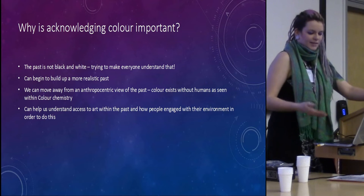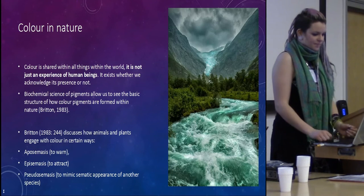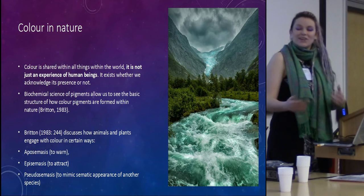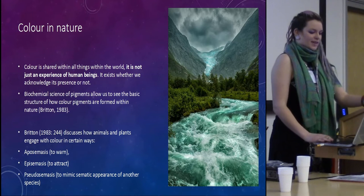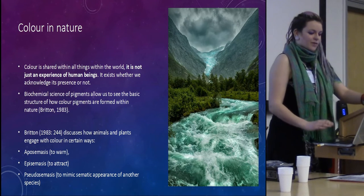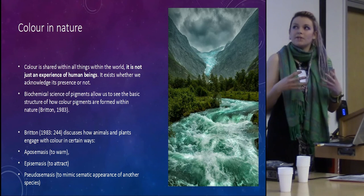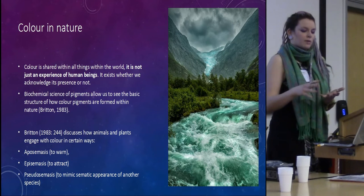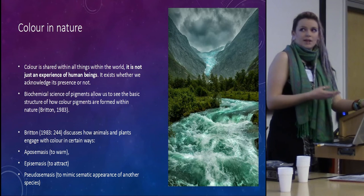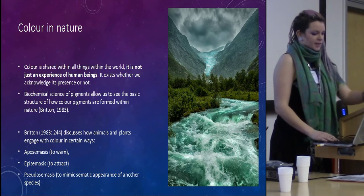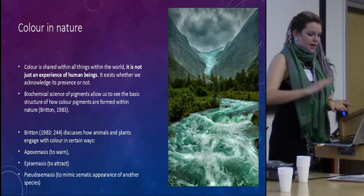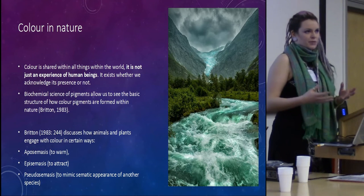Colour and nature: colour is shared with all things, living and non-living, and it exists whether we acknowledge that it's there or not — bringing about this non-anthropocentric view. Britain in 1983 wrote a very wonderful scientific chemical analysis of colours, producing all these chemical equations of how animals, insects, and humans produce these colours. It's a wonderful scientific look at how they exist within time and space, regardless of whether we engage with it or not. Then looking at how aposematism, episematism, and pseudomatism are used by animals to engage with colour.